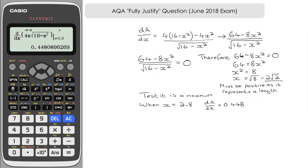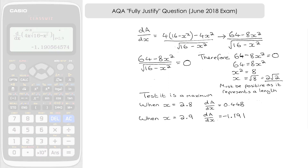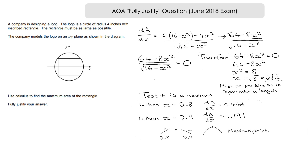Now testing x = 2.9, slightly above 2√2, the derivative gives dA/dx ≈ −1.191. So before the stationary point the gradient is positive, and after it is negative — positive to negative confirms a maximum. We have justified that x = 2√2 gives a maximum point, using the calculator to support the sign-change test while the reasoning itself is non-calculator based.